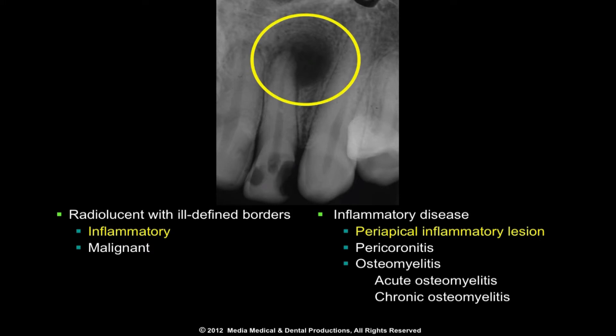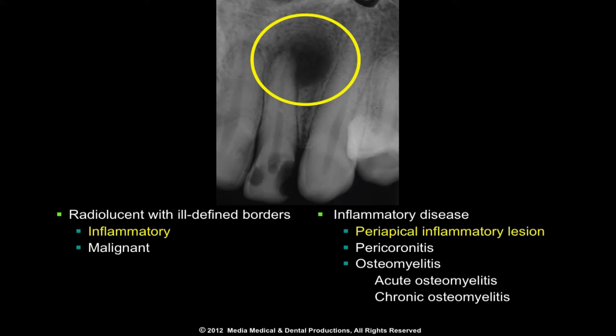When the initial source of inflammation is a necrotic pulp and the lesion is confined to the apical area of a tooth, the condition is called periapical inflammatory disease or apical periodontitis. If the lesion arises in tissue surrounding the crown of a partially erupted tooth, the condition is called pericoronitis.